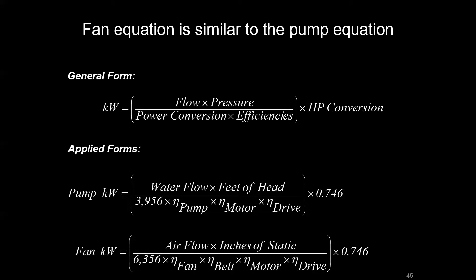There's an applied form for fan kilowatts that we can use. The pressure and flow in these cases is going to be air flow or CFM and inches of static or water column for the air side. Then we have some new constants we'll go over and some similar and some new efficiencies we need to apply.